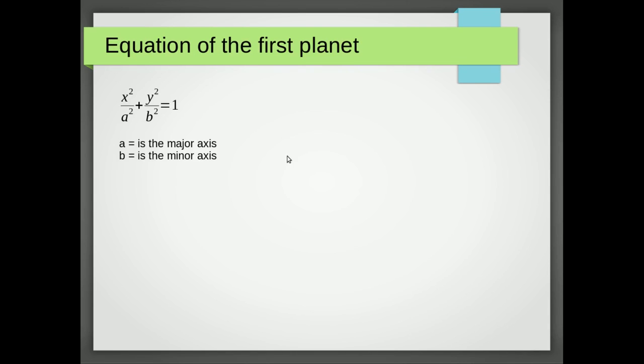Okay, so the first thing we want to do is get the equation of the first planet. This is the general equation of an ellipse, which is the motion of a planet. We know that it's in this form where a is the major axis, which in our case is 13, and b is the minor axis, which in our case is 5. So that will give us the equation x²/169 + y²/25 = 1.